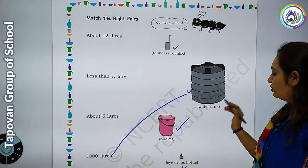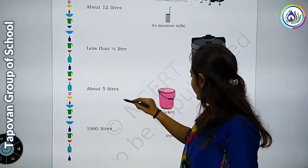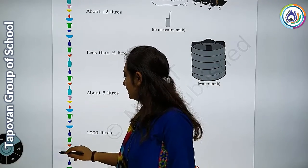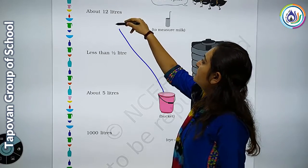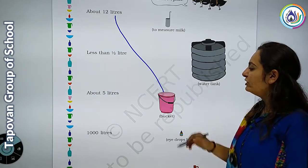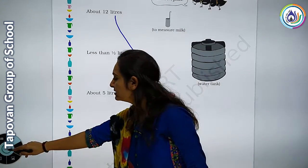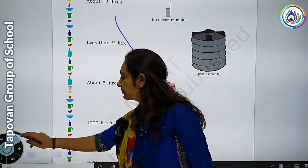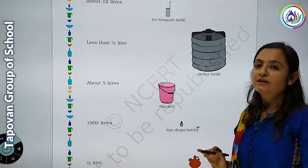अब लिखा है about 12 liters। तो 12 liters में देखो क्या है — एक है हमारी bucket। तो 12 liters will go with the bucket। अब यहाँ पे है less than half liter। तो देखो, half liter किसके अंदर आ सकता है — less than half मतलब half liter से भी कम — eye drops के अंदर। तो eye drops को हम less than half liter के साथ joint करेंगे।